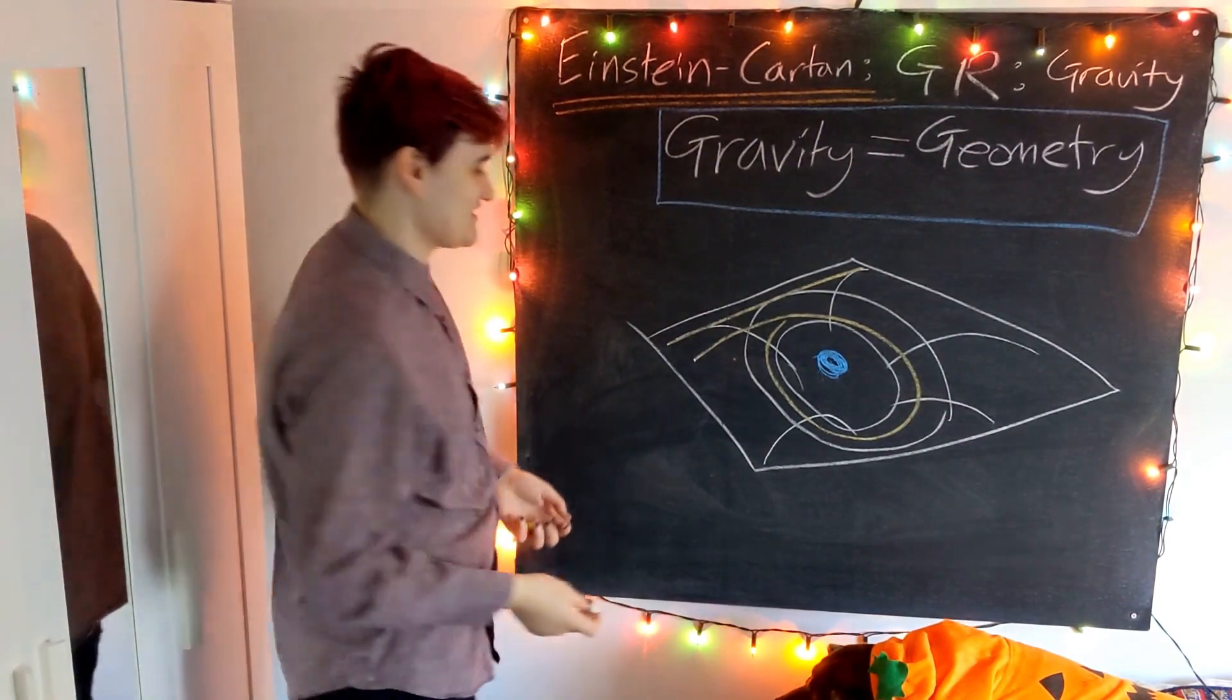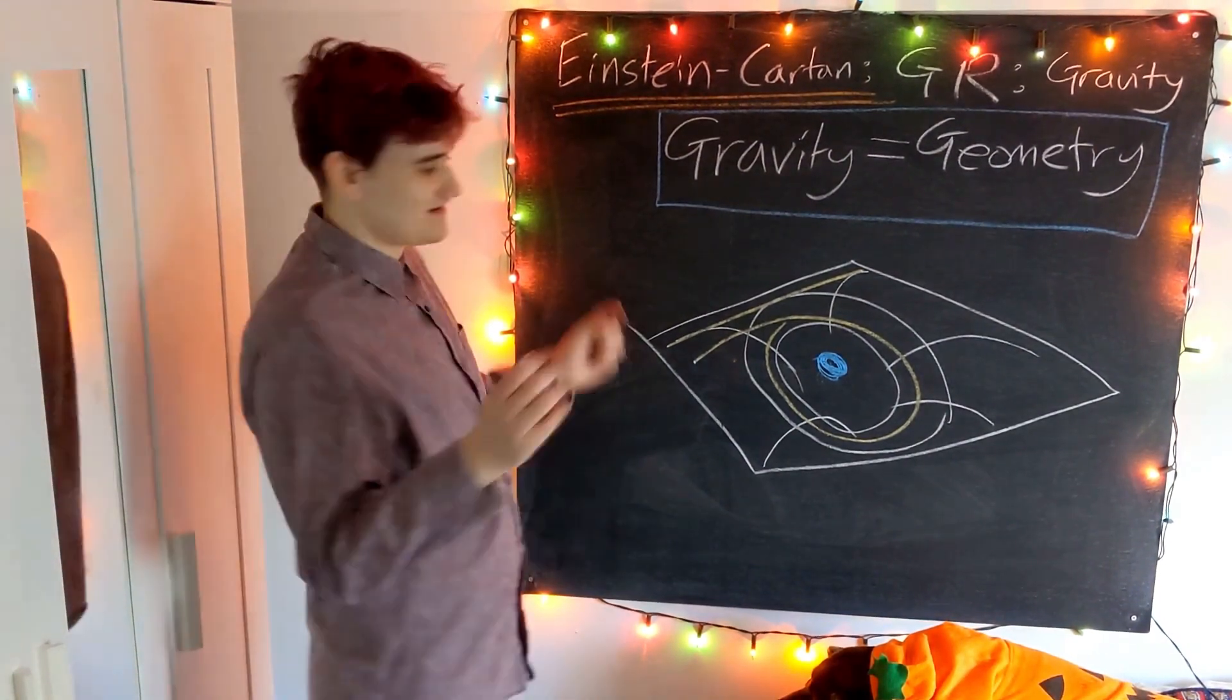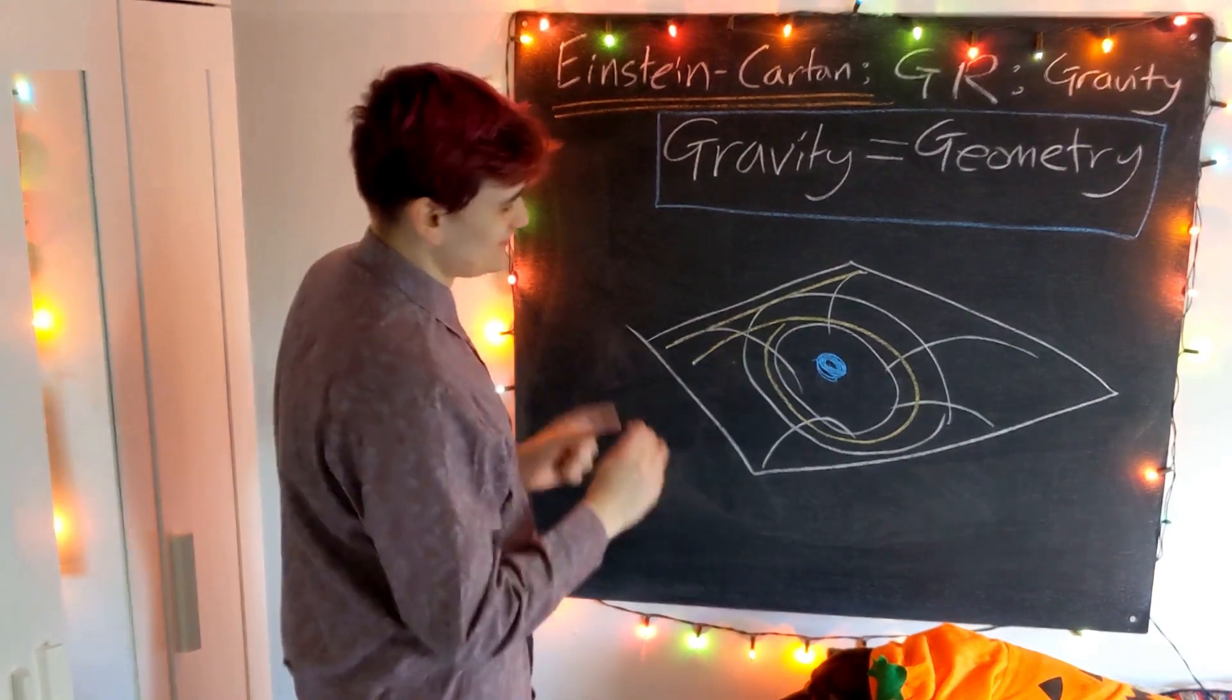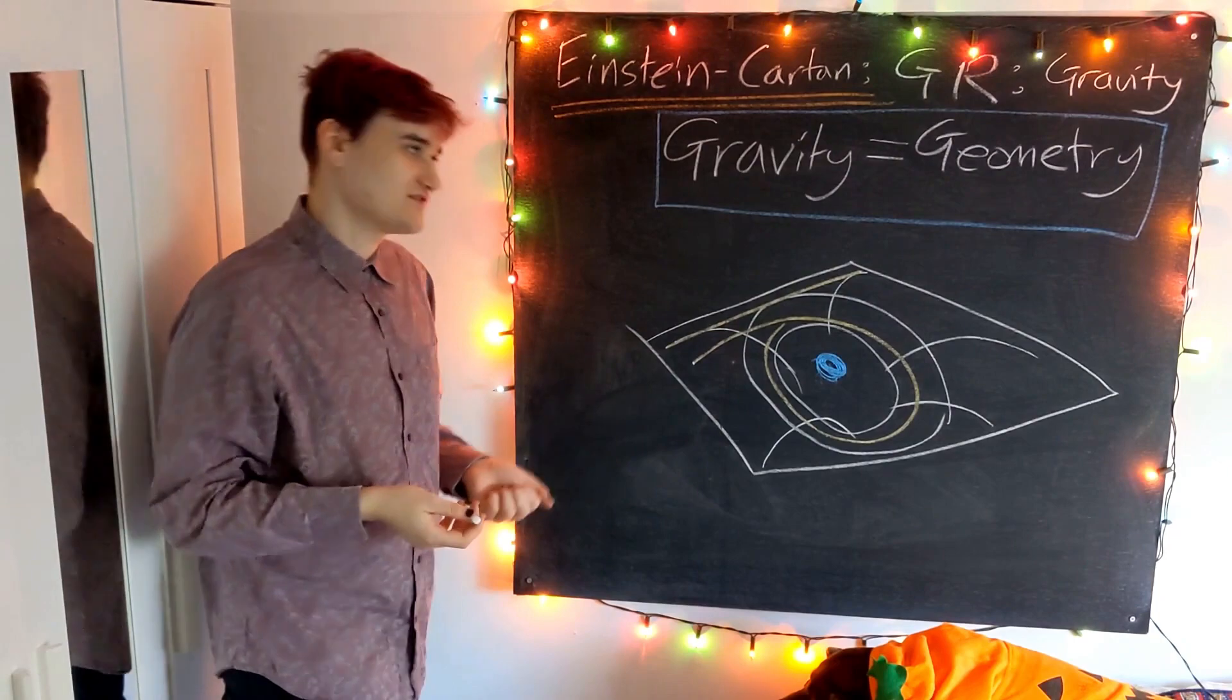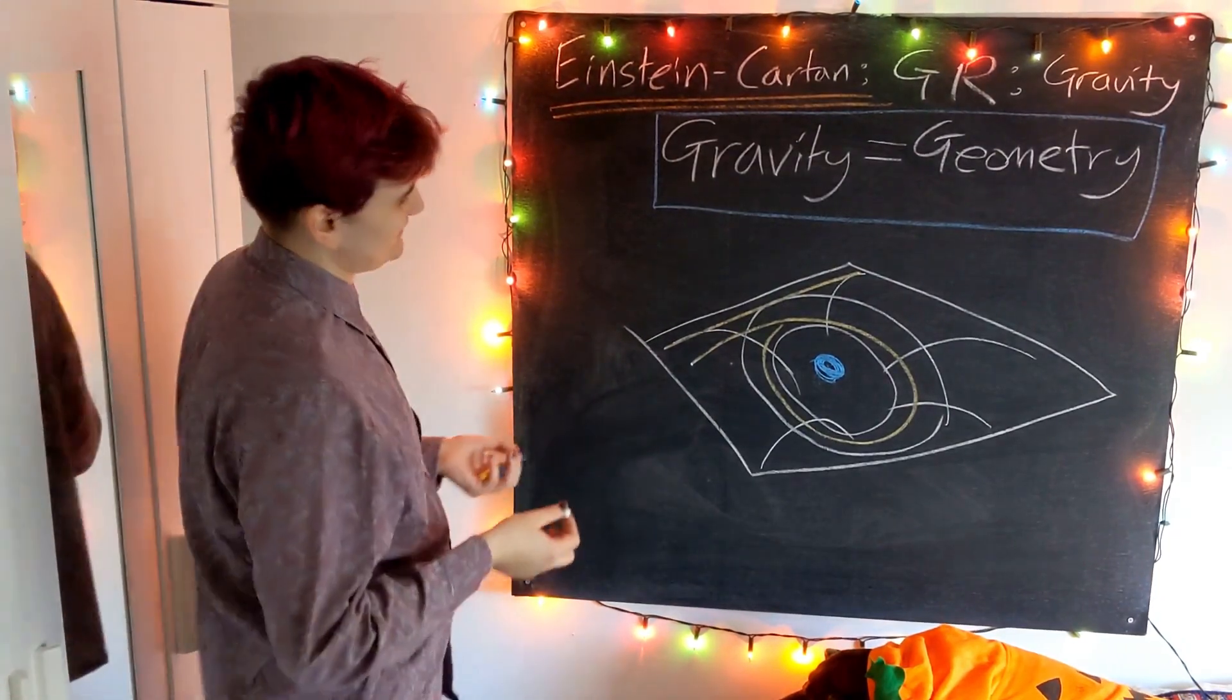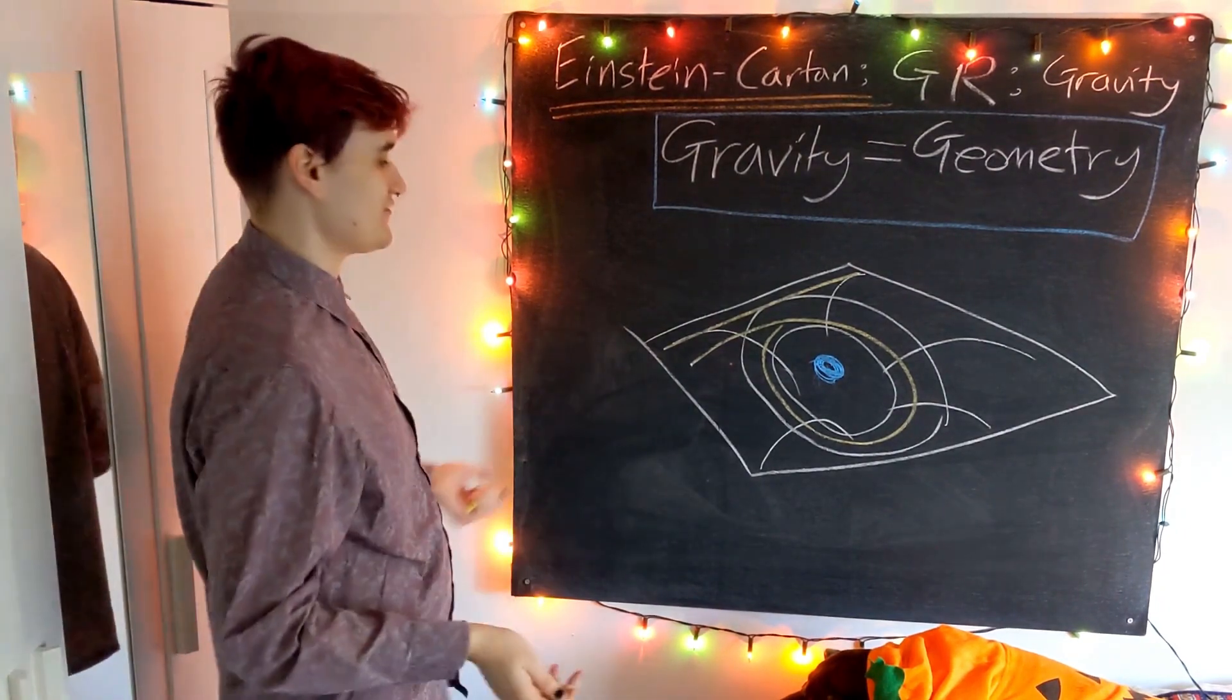Hopefully you've seen this analogy before—it's usually called the rubber sheet analogy. This is kind of all right to visualize, but it's really missing the point of what general relativity is all about. There are a number of things which are really wrong with this analogy.